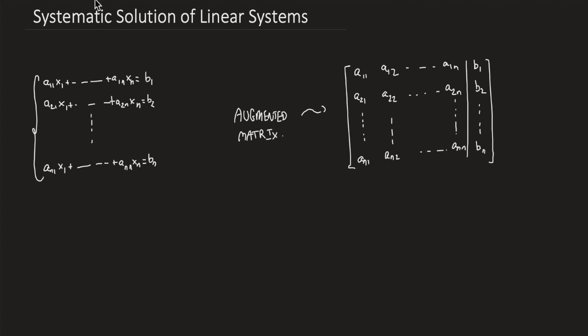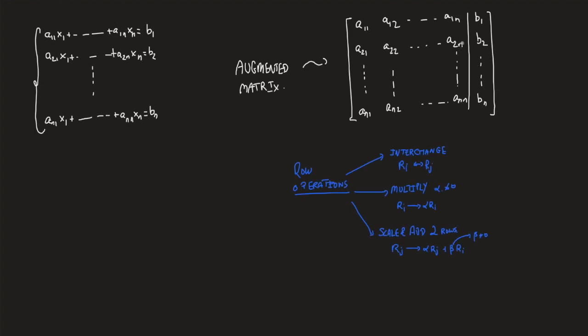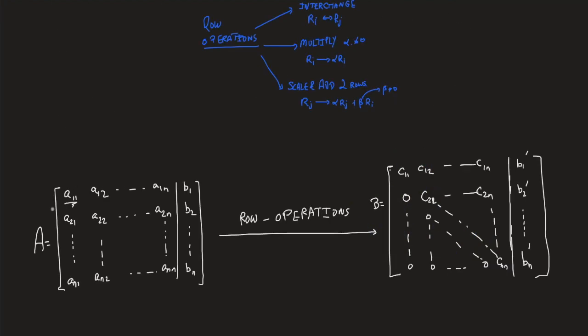In the previous lecture we discussed a procedure to solve the linear system: the so-called Gaussian procedure. We said that we're allowed to do some elementary row operations — that is, interchange two rows, multiply a row by a non-zero scalar, scale two rows and add them up, putting the result in one of the two rows. We do this to transform the augmented matrix into upper triangular form in order to solve using back substitution.